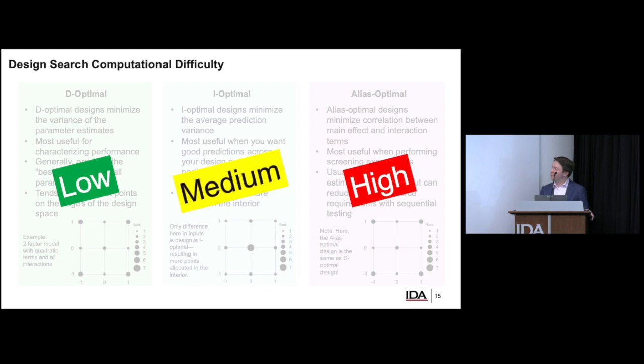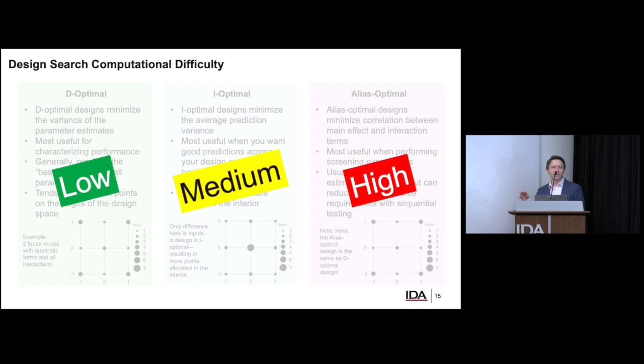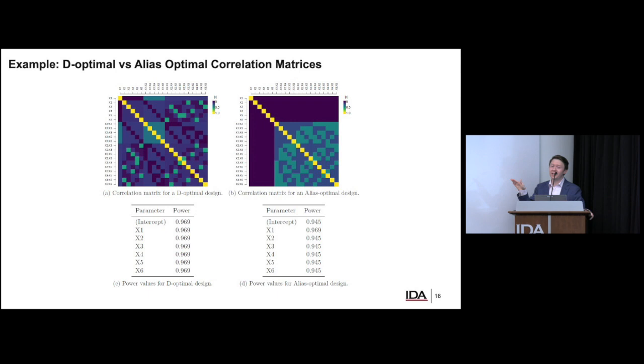All these criteria have different computational costs. I like to look at it as: D-optimality is pretty much instantaneous; I-optimal is like — check your email; and Alias-optimal is — go get a cup of coffee. But generally speaking, these algorithms run fast enough where even the longest ones, you're not talking about your computer stalling out for days. In a lot of cases, the search process is fairly quick.